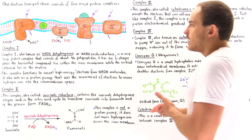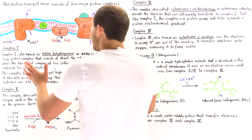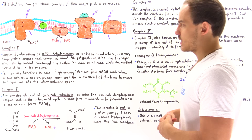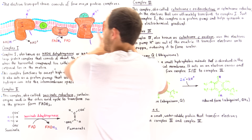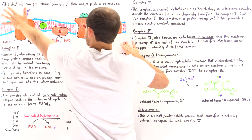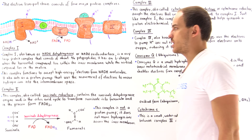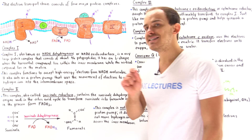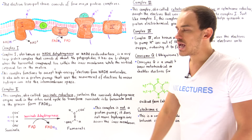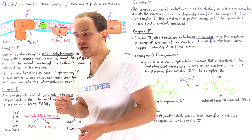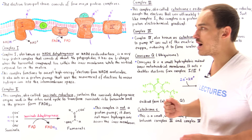Let's begin with protein complex 1. This is a diagram of only one of the electron transport chains of the many that exist in a single mitochondrial inner membrane. This is the inner mitochondrial membrane, this is the mitochondrial matrix, and this is the intermembrane space that exists between the two membranes of the mitochondrion. Protein complex 1 is also known as NADH dehydrogenase or NADH oxidoreductase, because this is the protein complex that accepts those high-energy electrons from the NADH molecules produced in glycolysis as well as the citric acid cycle.